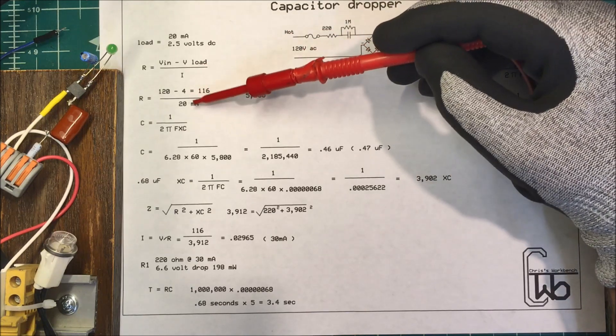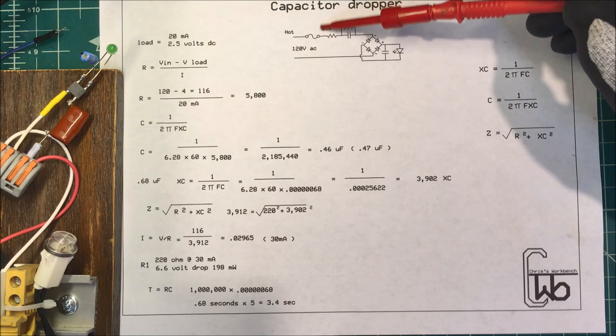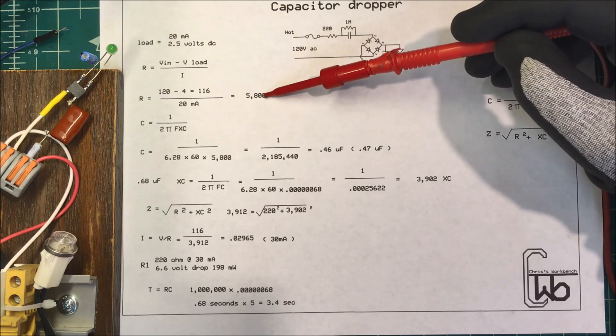So if I take 20 milliamps and divide it into 116 volts, which I want to drop across here, that's going to be 5,800 ohms.